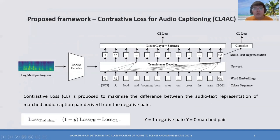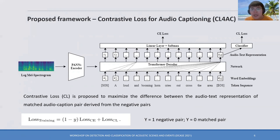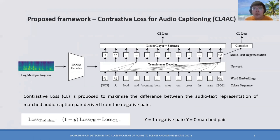We feed this vector into the CL4AC module to discriminate whether the audio and caption data is matched. By contrasting negative samples and matched samples, the quality of the latent representation and alignment between audio and text can be improved without introducing large external data, even when training with limited data.